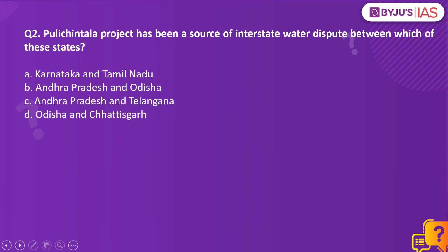Moving on to question number 2. Puli Chintala project has been a source of interstate water dispute between which of these states? Option A, Karnataka and Tamil Nadu. Option B, Andhra Pradesh and Odisha. Option C, Andhra Pradesh and Telangana. Option D, Odisha and Chhattisgarh.